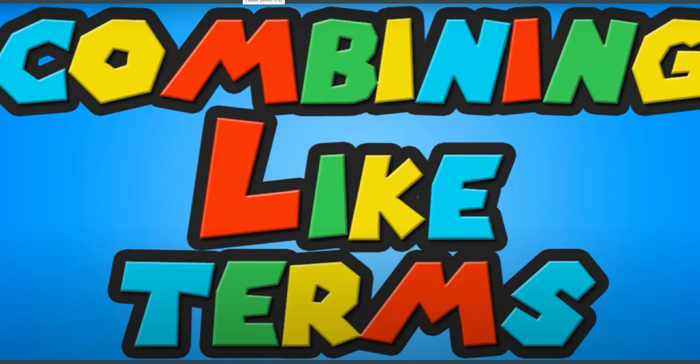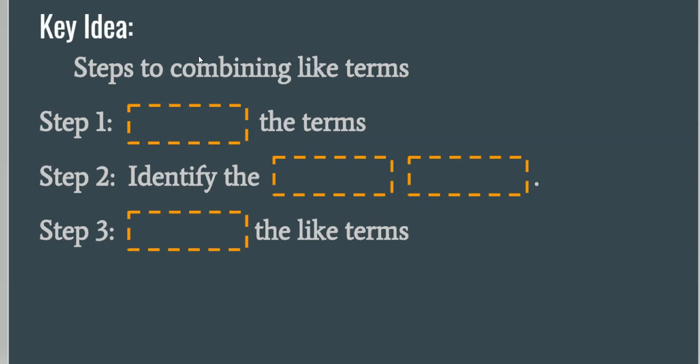Alright, so let's see how we combine like terms. Steps to combining like terms: Step one, we want to separate the terms. Step two, identify the like terms. And step three, we combine the like terms. And you will combine the like terms by either adding or subtracting.